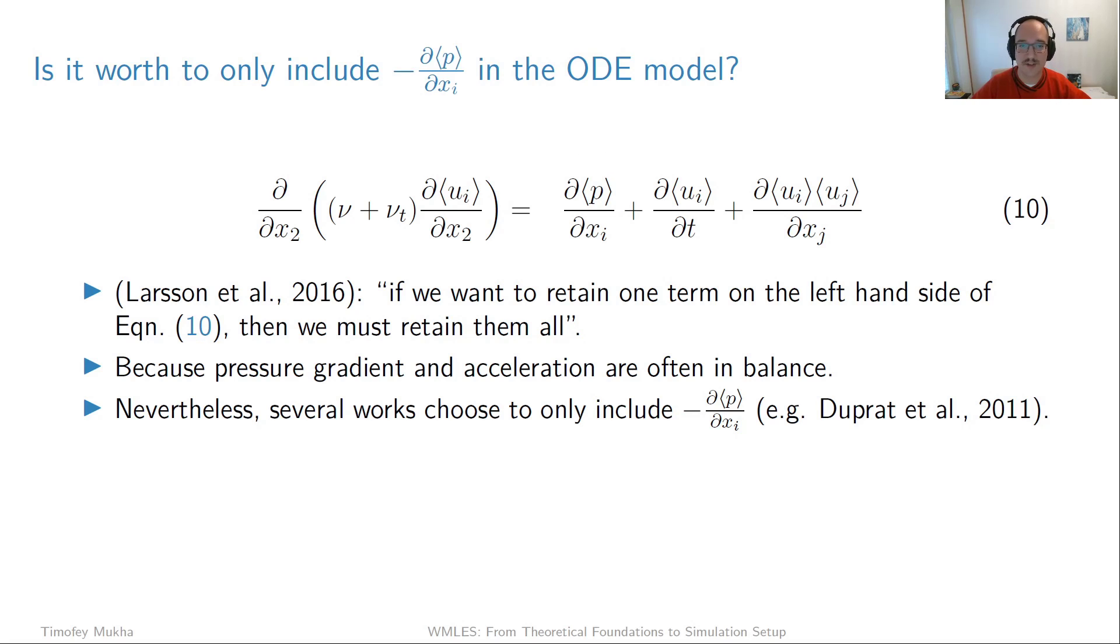On the other hand, it doesn't stop people from trying these models and claiming that they work better in situations where a strong pressure gradient is present. For example, Duprat et al. 2011 looked at periodic hill flow and got better results with an ODE model incorporating the pressure gradient term. It still remains an open question of how to treat this. At least for some flows, it can be useful to retain the pressure gradient term, but whether one gets a good generally applicable wall model remains a point of investigation.